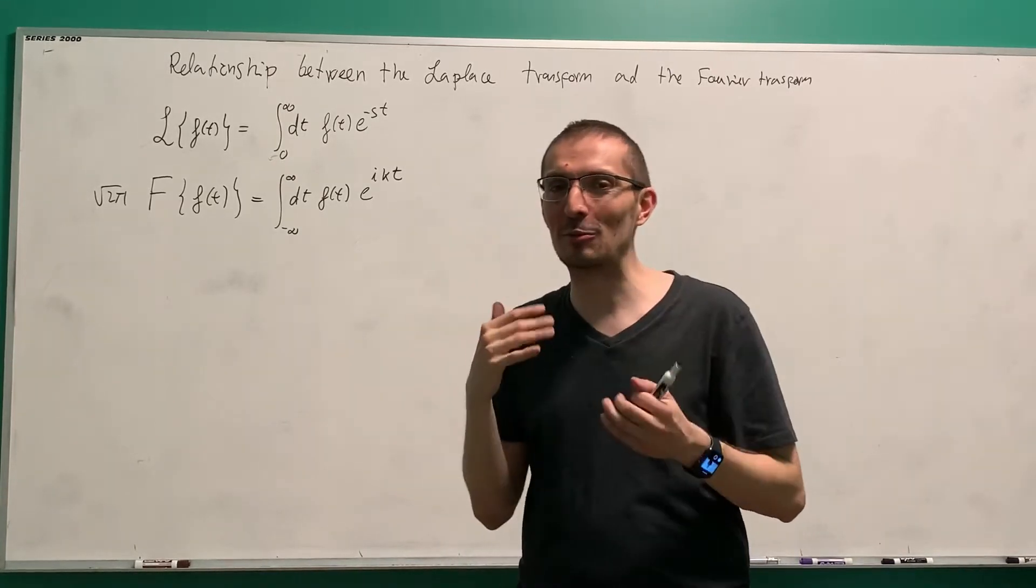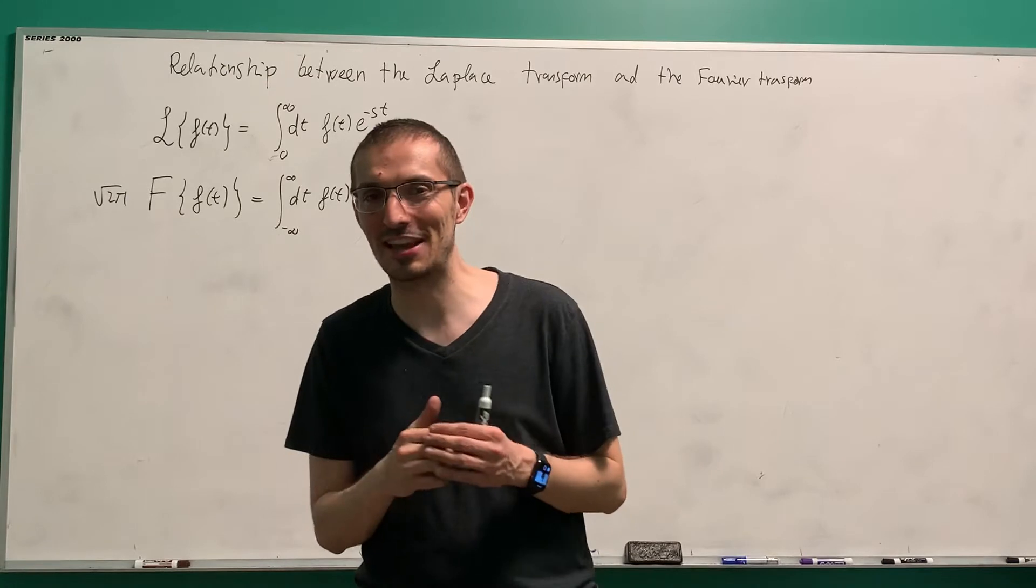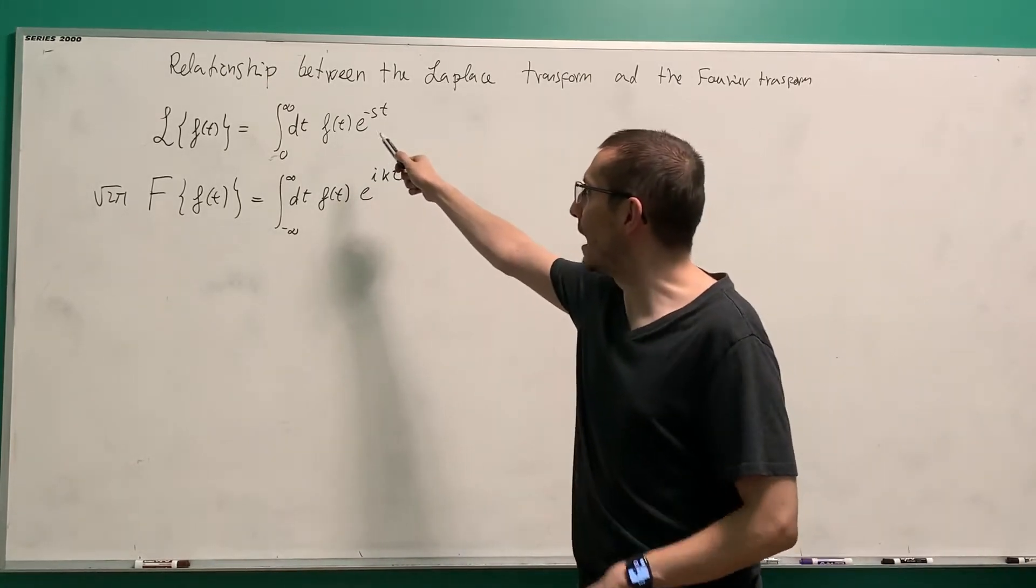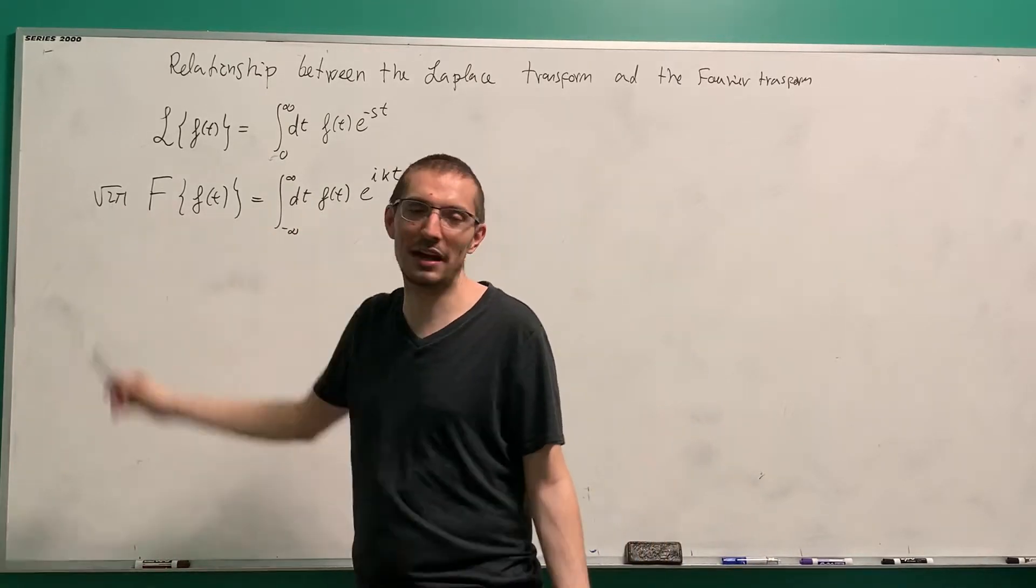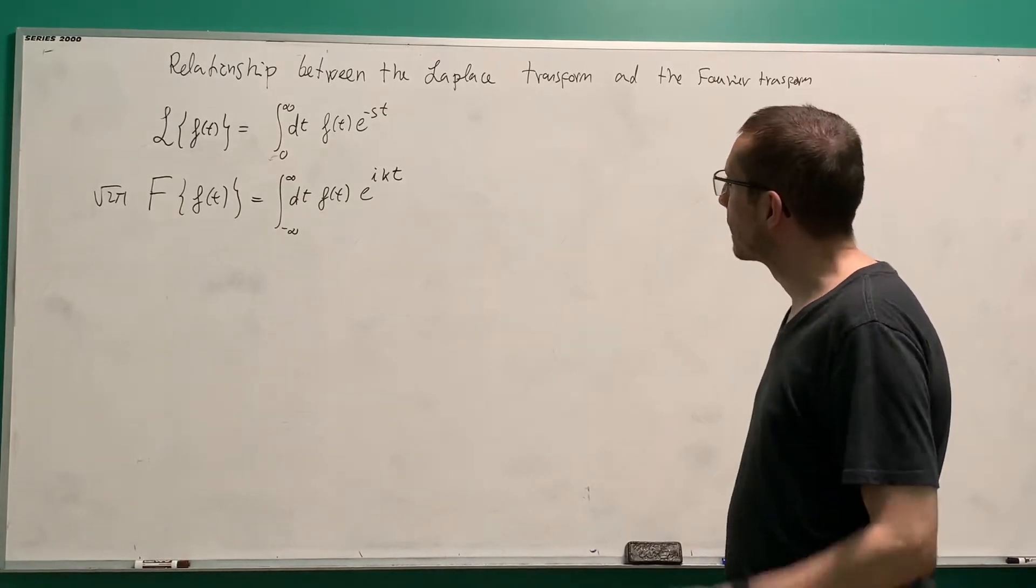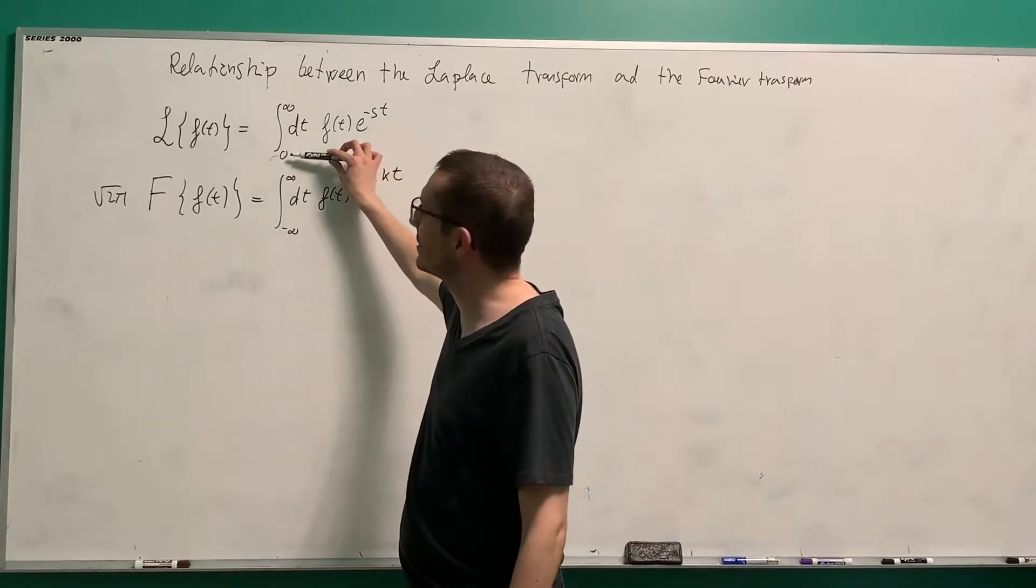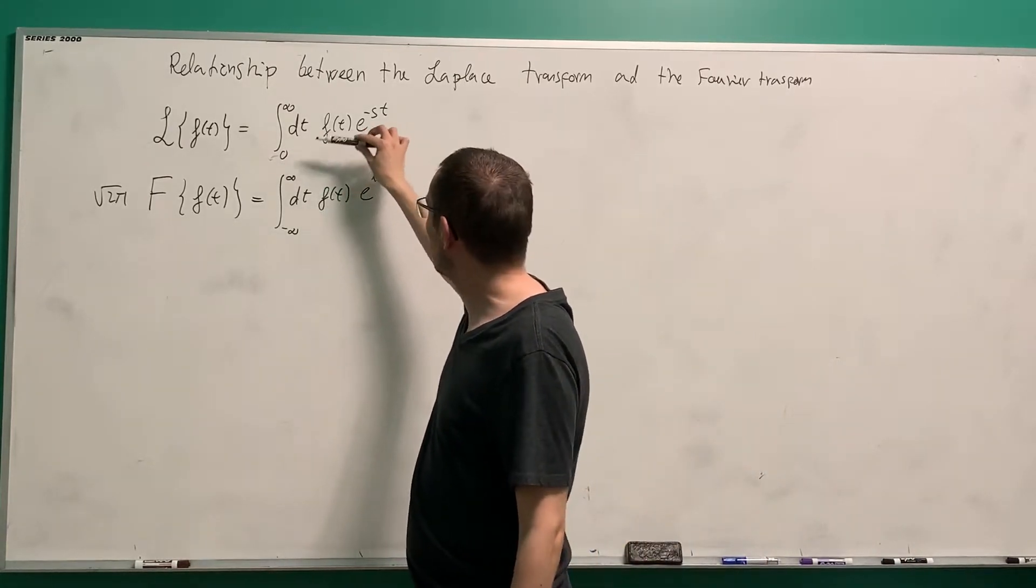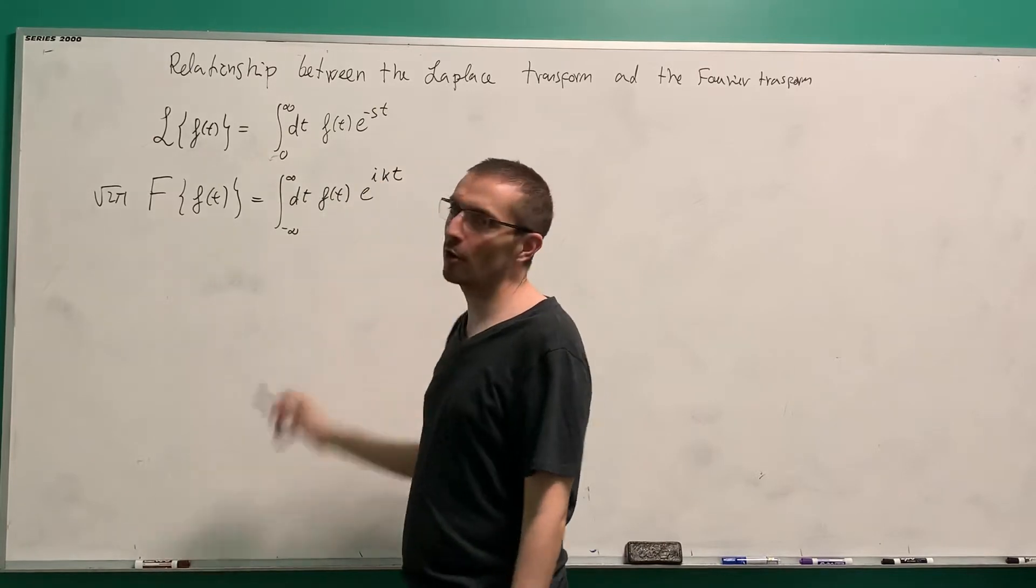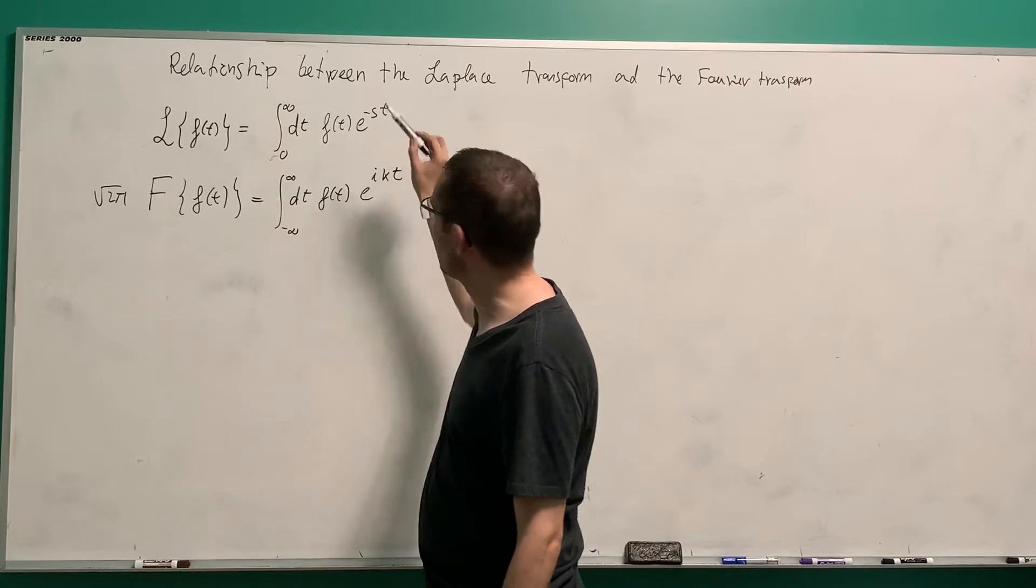So we're going to understand that and also relate notions of algebra and calculus again to see that there are two different sides of the same coin. First, the Laplace transform, I have it written here, and the Fourier transform, I have it written here, multiplied by root 2π. The normalization factor is irrelevant for this analysis. Now we see that there are two differences. The first difference is that this starts at zero.